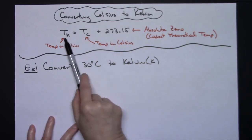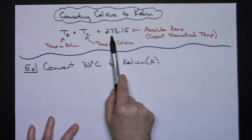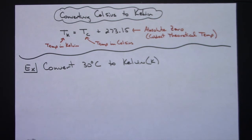So the temperature in Kelvin is equal to the temperature in Celsius plus 273.15, which is your absolute zero, coldest theoretical temperature.